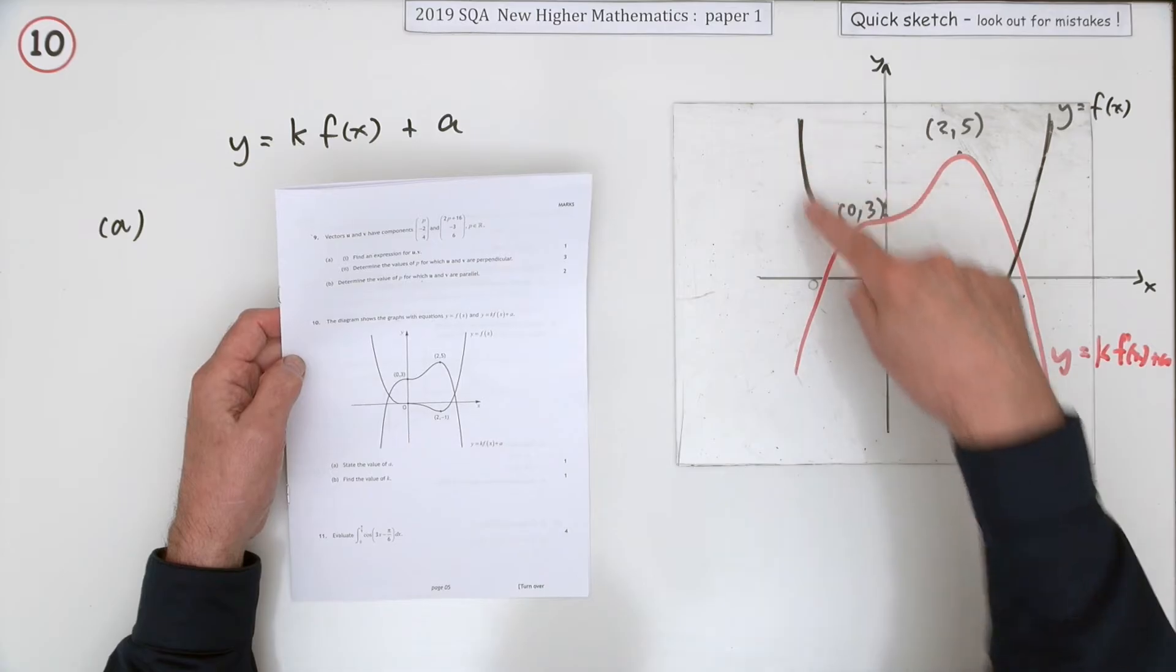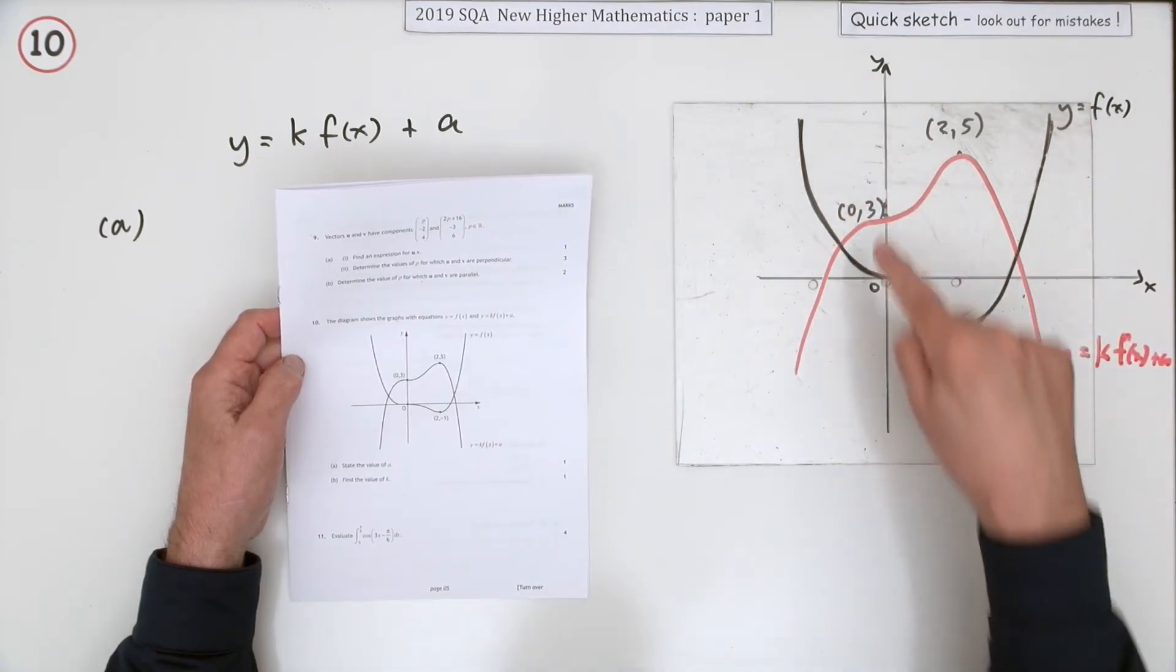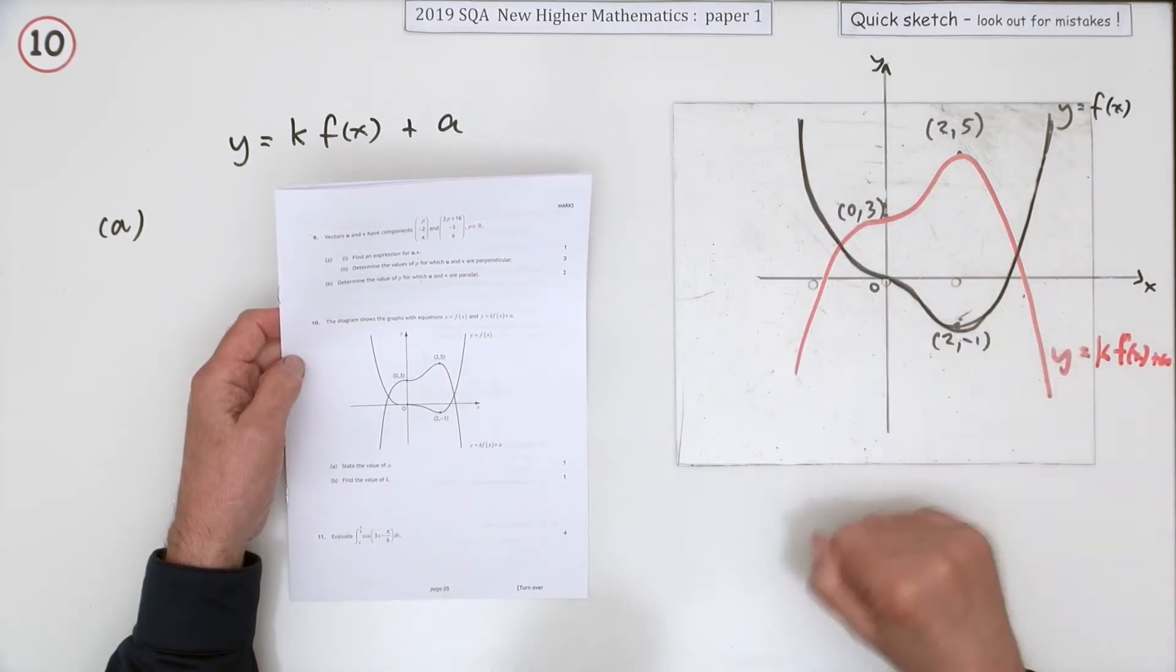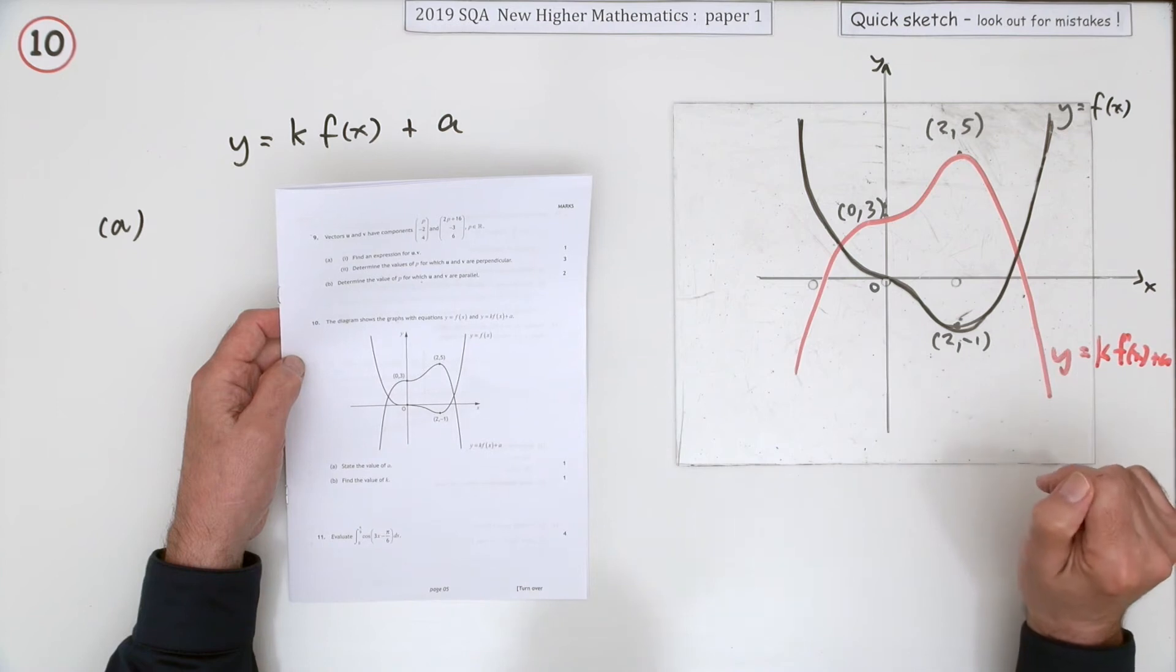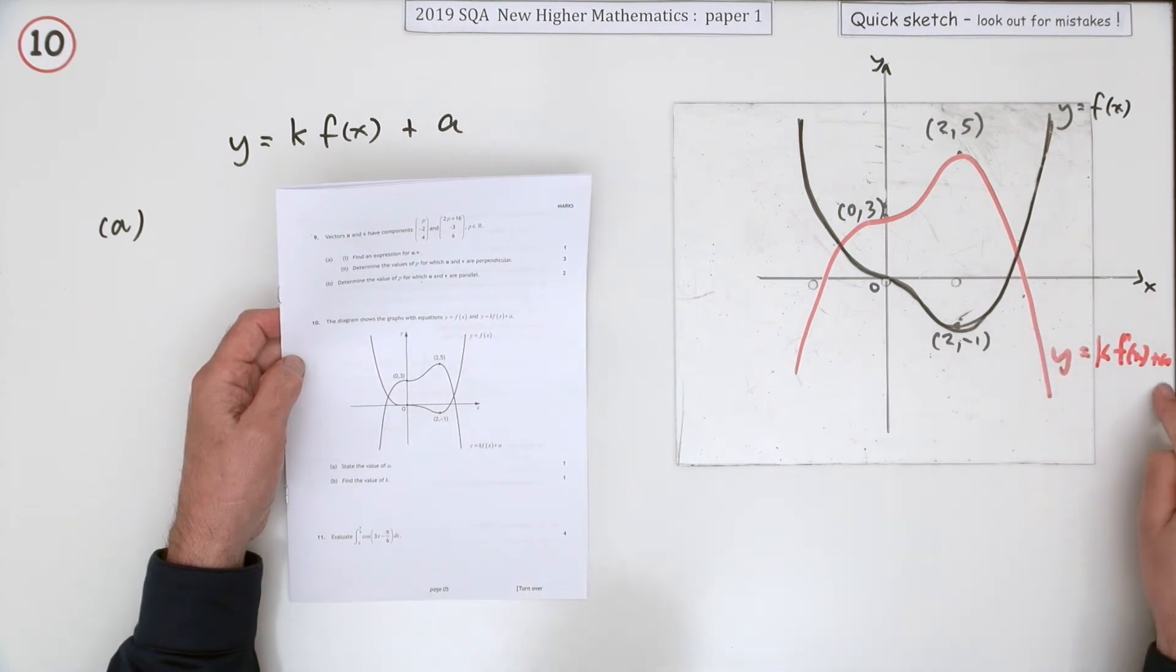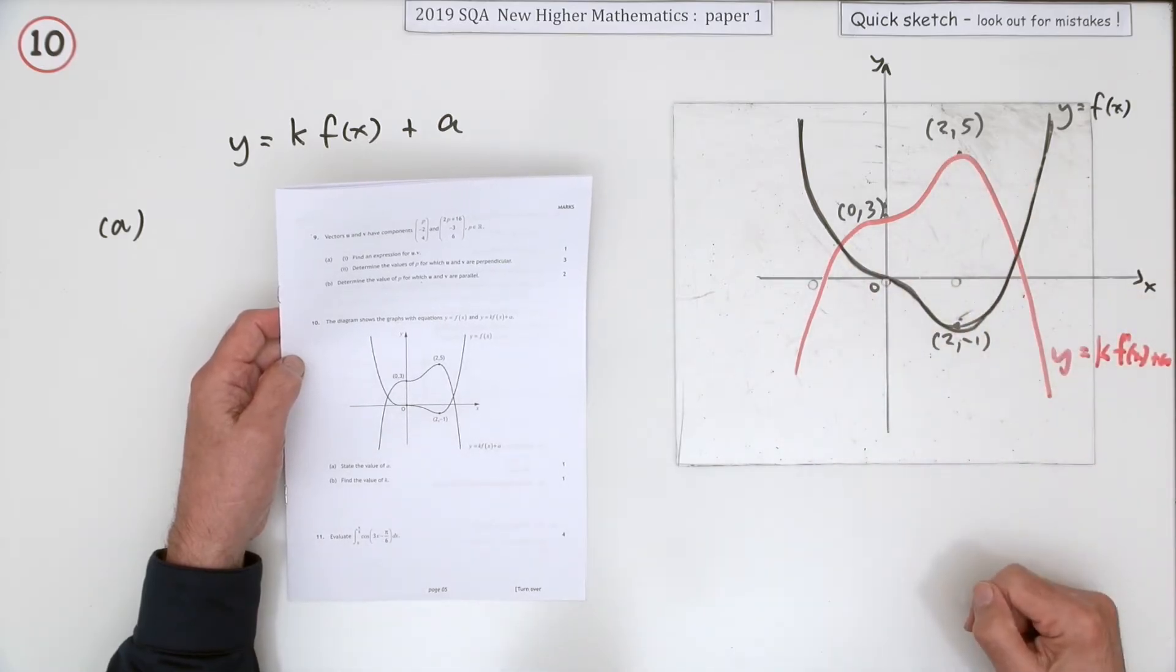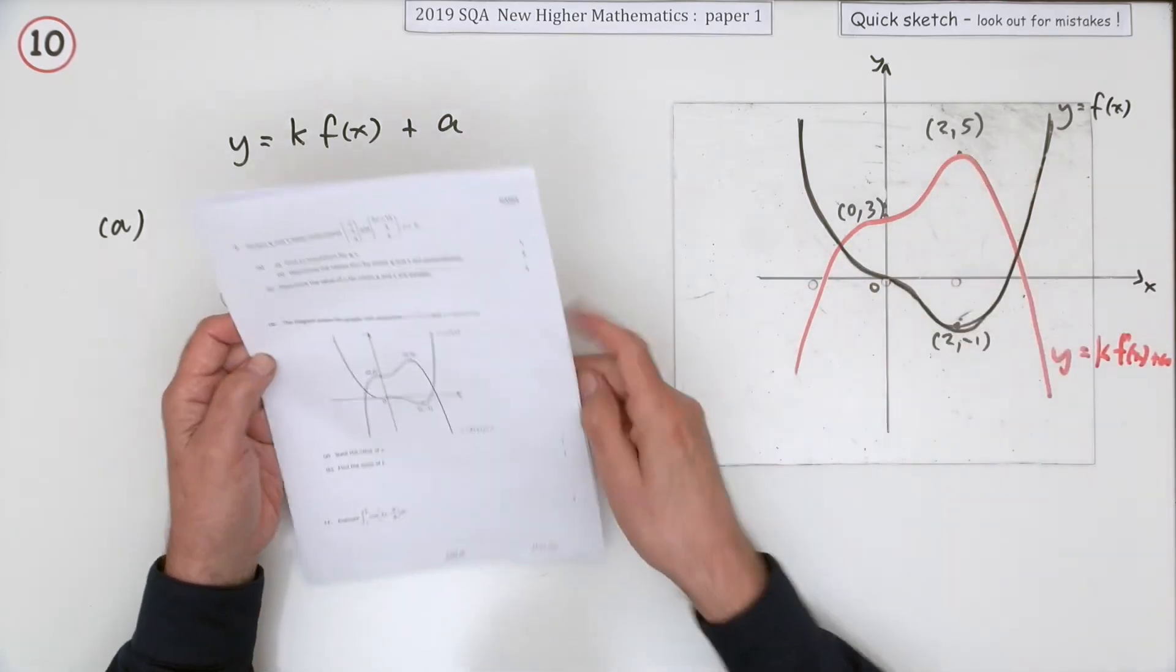What it says is you've got this original function here passing through the origin and with a minimum at two negative one. After you've done something to it which involves multiplying and adding, it ends up looking at this red one here passing through zero three and two five.